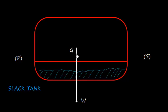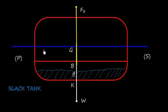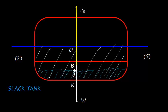We know the definition of center of gravity: the center of gravity is a point where the total weight of the ship W acts vertically downward. Suppose this is the water line where the ship is floating in water. This is the underwater volume. The geometrical center of the underwater volume is the center of buoyancy, and the force of buoyancy acts vertically upward. In order to float the vessel, this force of buoyancy should be equal to the weight which acts vertically downward.